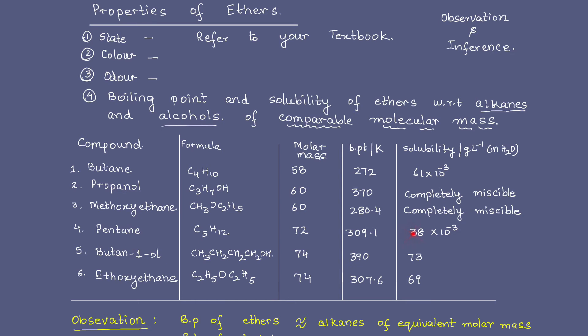Pentane, the solubility is 38 into 10 to the power minus 3. That means with increase in the number of carbon atoms from butane to pentane, the solubility has actually gone down. In fact, to compare any type of compounds, it is best that you take the data and reason it out yourself rather than memorizing. Butan-1-ol and ethoxyethane both have equal molar mass and their solubility is also quite close to each other. Their solubility is much more than that of alkanes of equivalent molar mass.